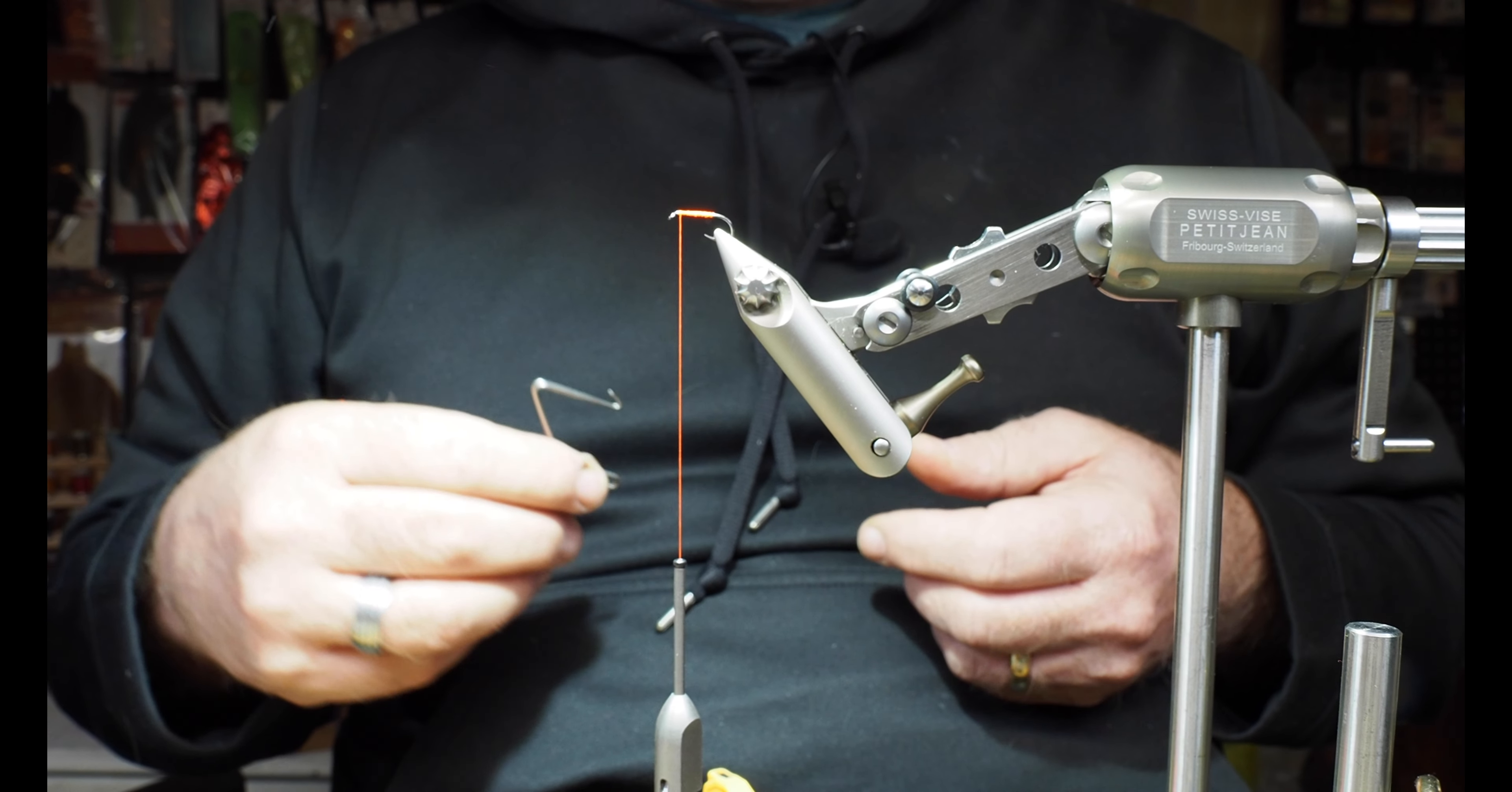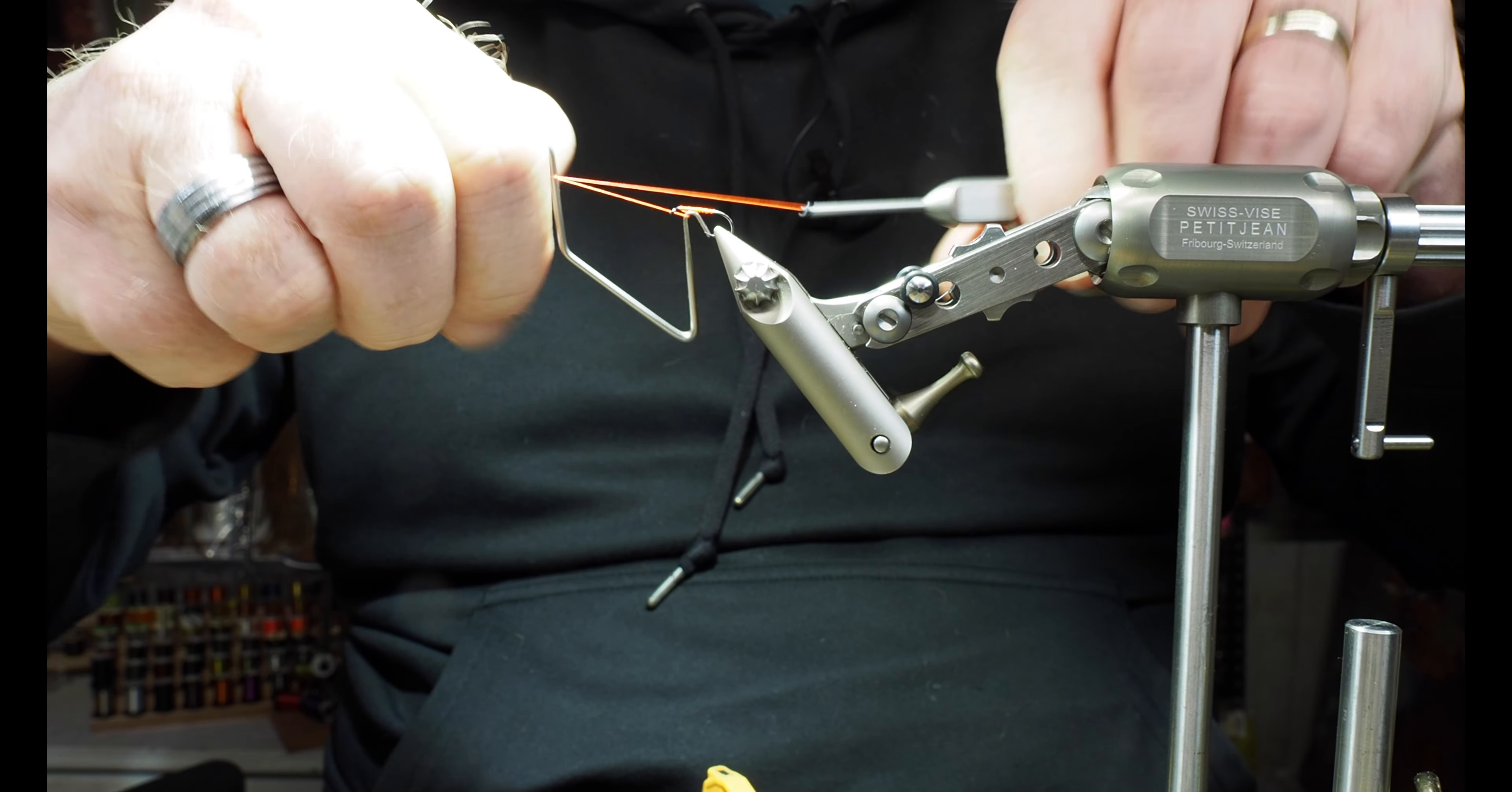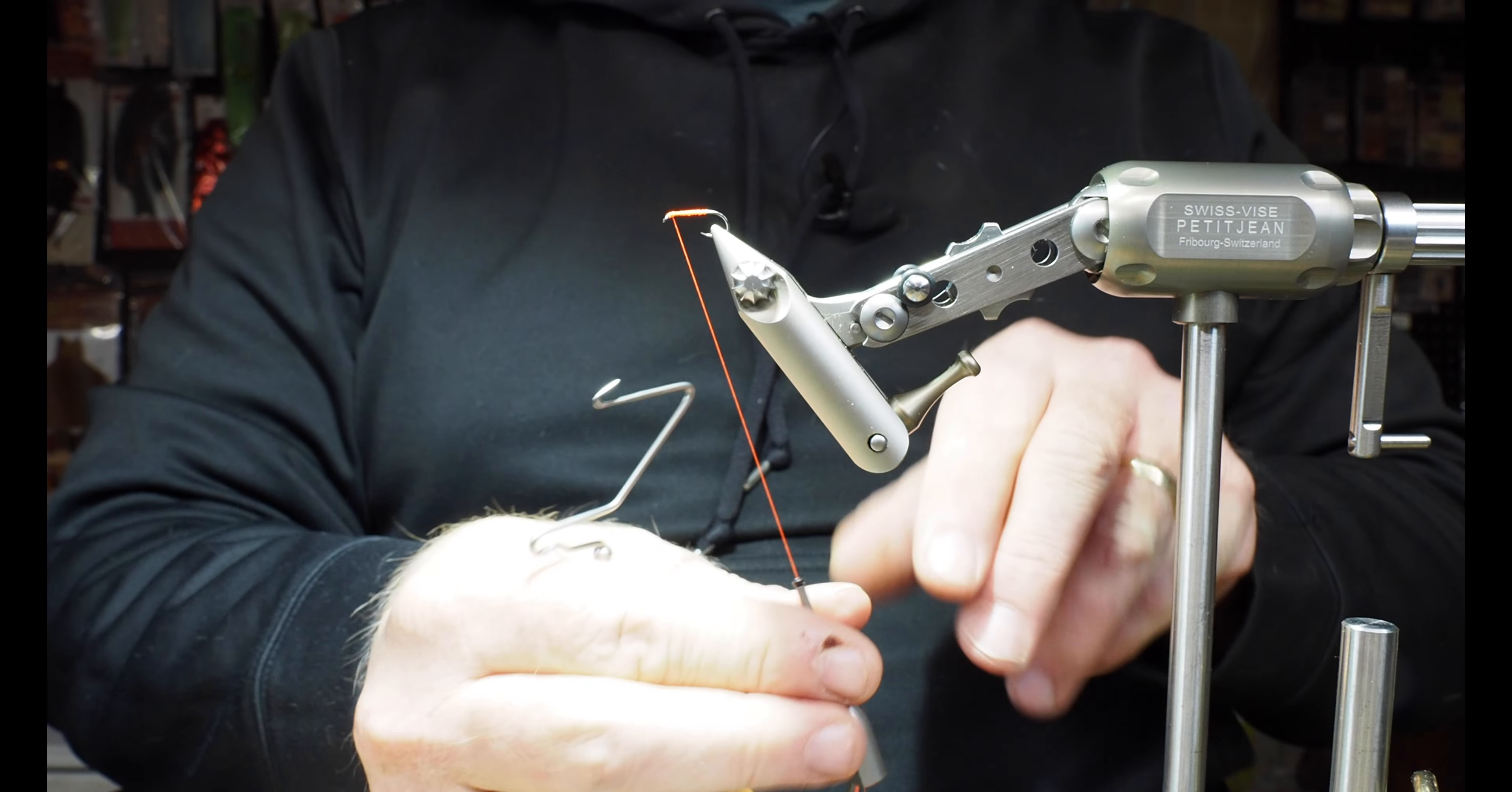And I'm ready to tie it off, put some head cement on it, and be done with the fly and move on to my next one. So I've got my thread there. We're going to do this a little bit faster just so you can see that once you get this figured out, it's not that challenging. So two, three, four, five, down, off, let go. Just like that.